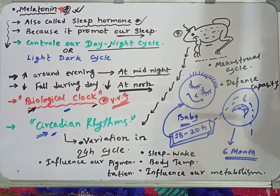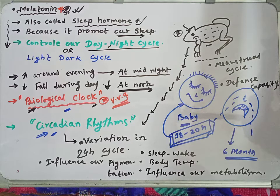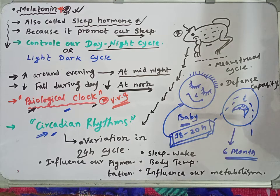Two more statements to add: in mammals, melatonin possibly acts as an inhibitory factor for sexual maturity. If melatonin levels are high in a mammal's body, sexual activity and sexual maturity are inhibited. Note the word 'possibly' because this is still under research.